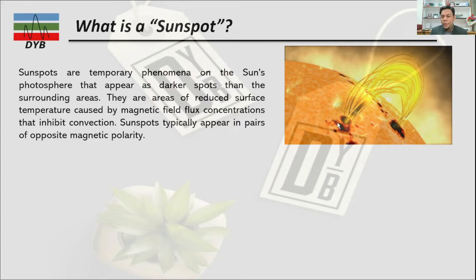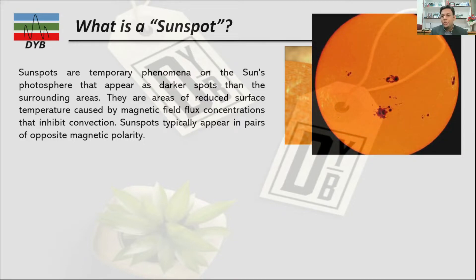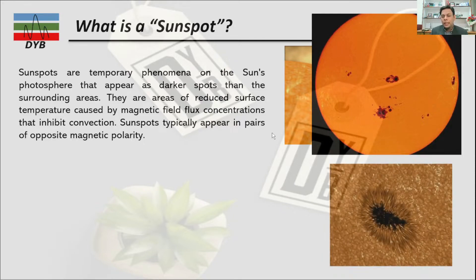These spots normally appear in opposite magnetic polarity. There are multiple sunspots in this region, and there are also other scale figures which show the sunspots. This is the photosphere or the surface of the sun, and these are the sunspots which look like this.